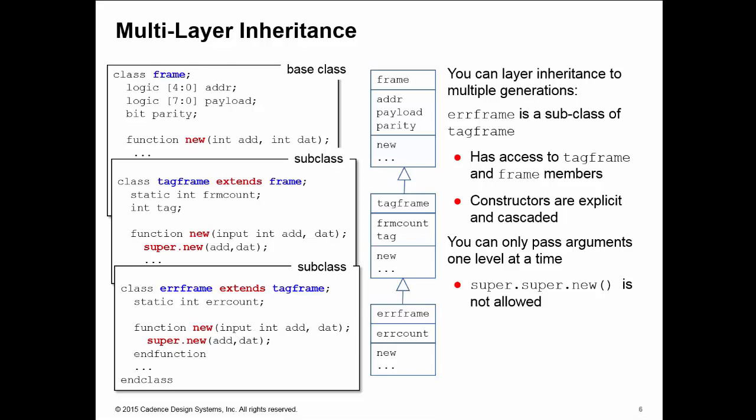You can only pass these arguments one level at a time. You can't call super.super.new. The error frame must pass those arguments up to tag frame with a super.new call and tag frame must pass them up to frame with another super.new call, and both calls must be the first line of the subclass constructors.